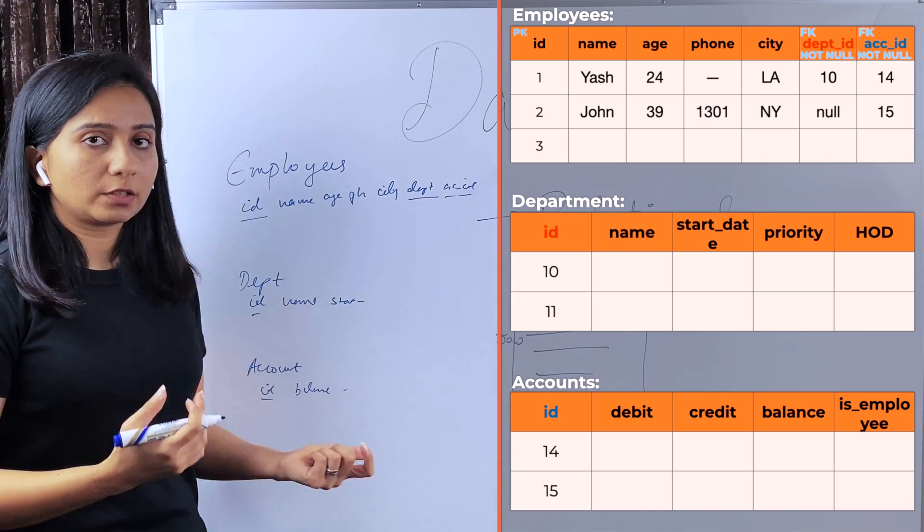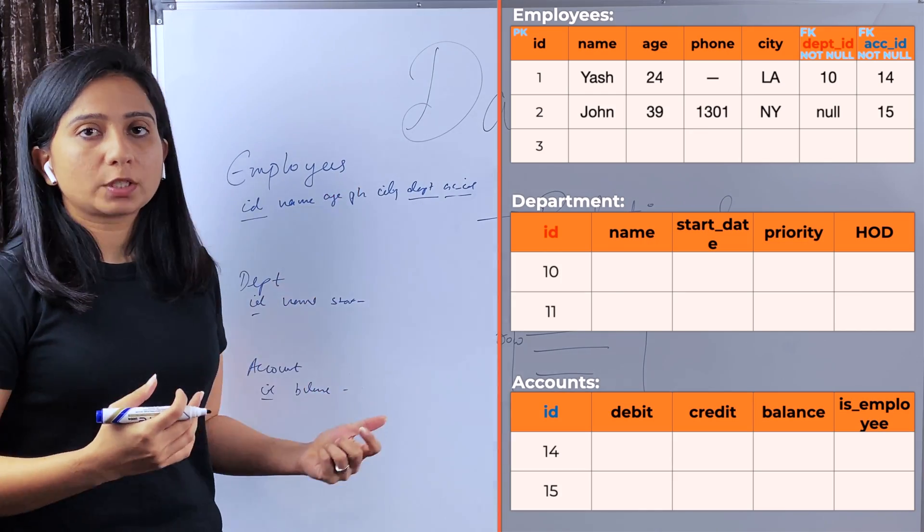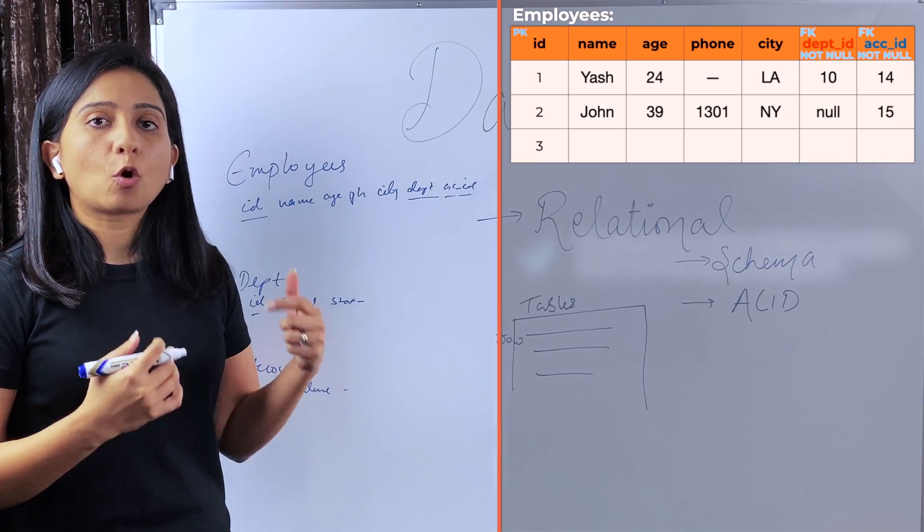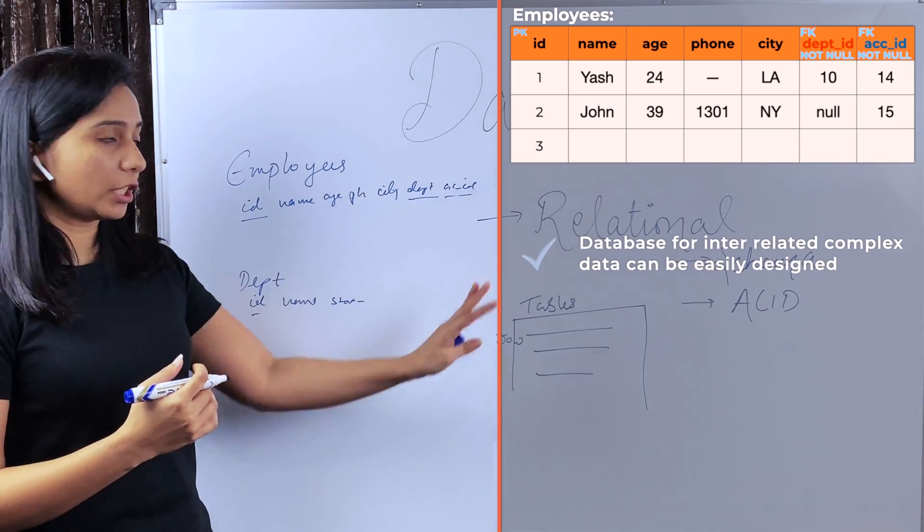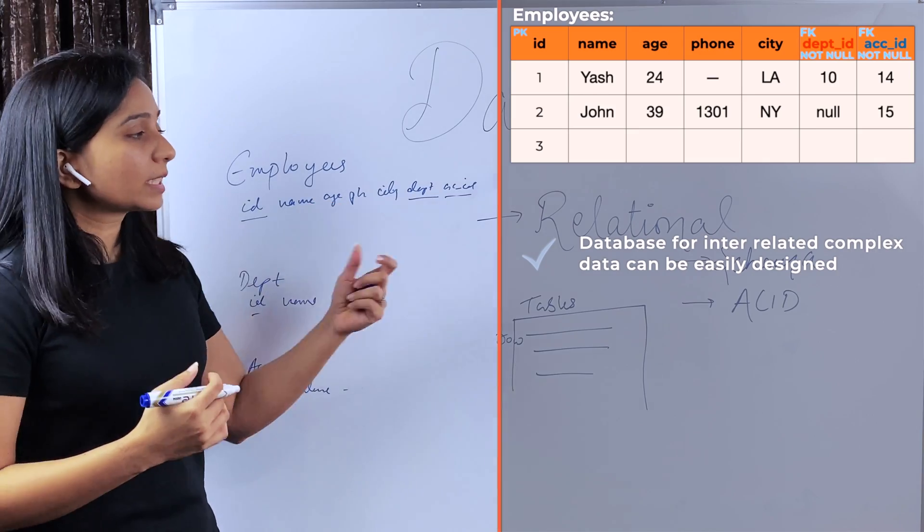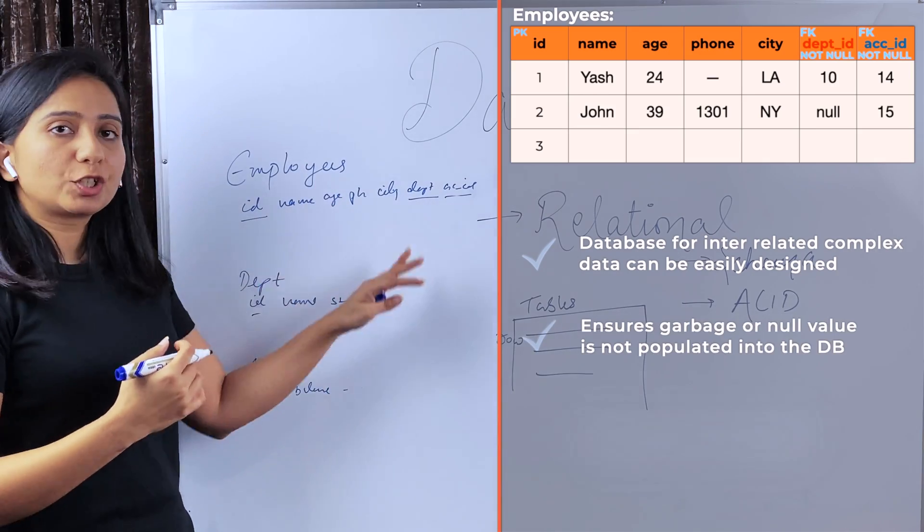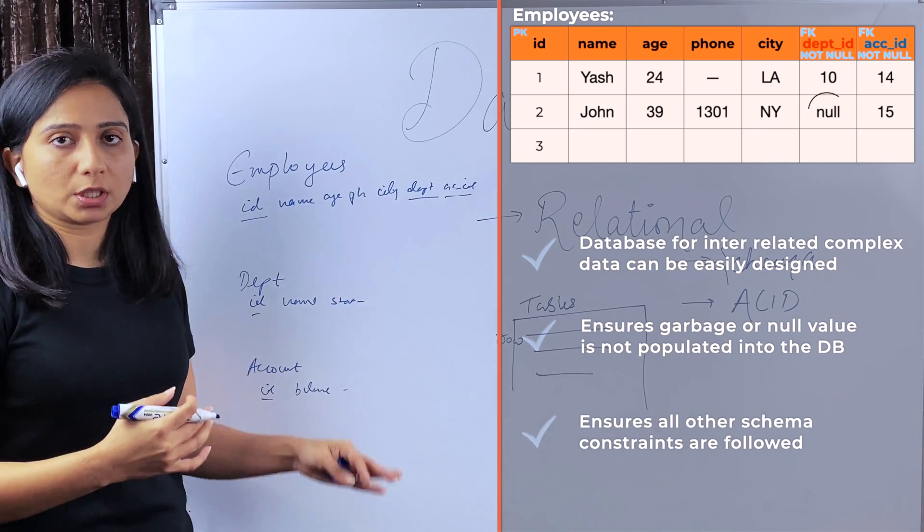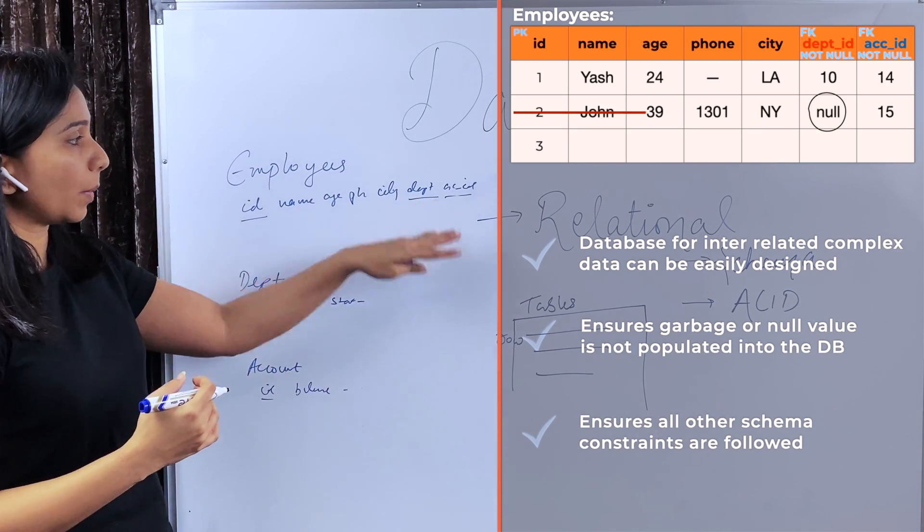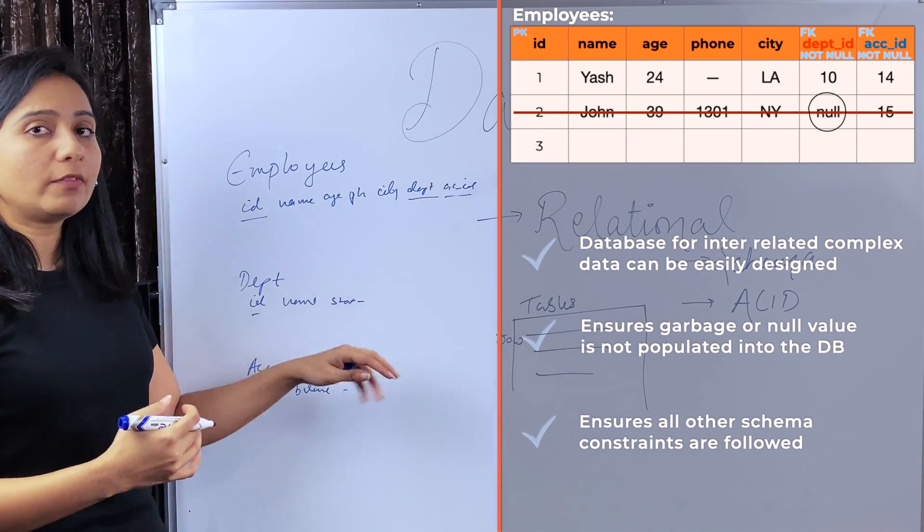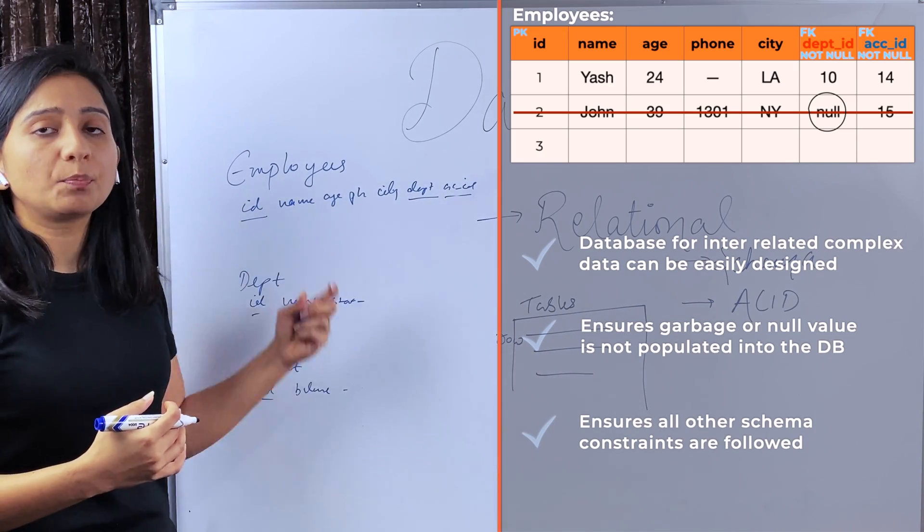What are the benefits of relational DBs or schema? One, you can represent complex data easily using relational tables. Second, with the schema constraints, you can ensure that some garbage data or null data doesn't get into your database because the schema constraints like department ID cannot be null, account ID cannot be null, will ensure that you don't have inconsistent data or bad data in your database.